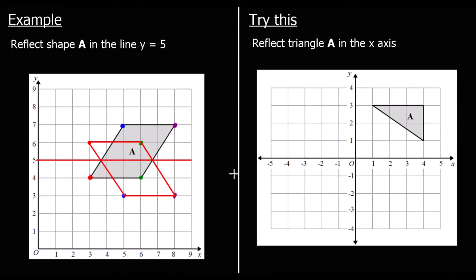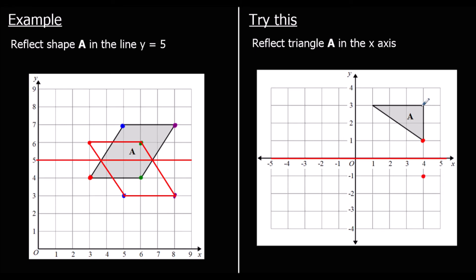Here's one for you to try: reflect triangle A in the x-axis. The x-axis is this line here, so this is our mirror line. Each point is going to be the same distance away on the other side. For this red point, we're one away, so we go one away on the other side. This green point was three away, so we go three away on the other side.